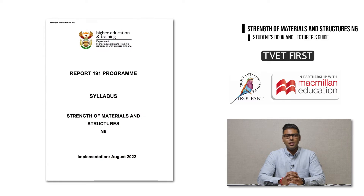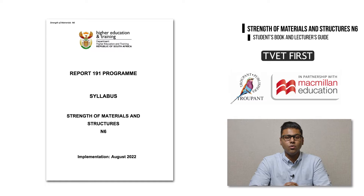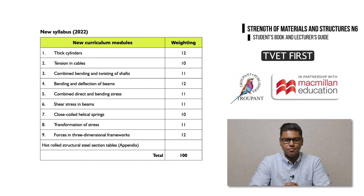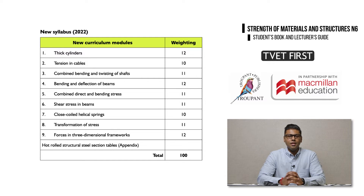Let's begin with the important changes to the Strength of Materials and Structures N6 curriculum. The syllabus has been fully reworked and updated. It has been restructured and reordered and is now divided into 9 weighted modules. Both the learning content and the learning outcomes have been completely reworded and much more detail has been provided for all sections.